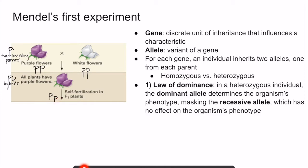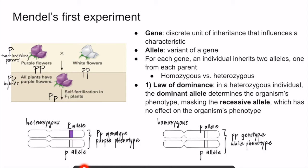Because of the law of dominance, recessive traits are only expressed in homozygous recessive individuals who have two recessive alleles for that trait. For example, the white flowers in the parental generation have two recessive white alleles, which is why they actually express the white color trait. Here there is an overview of these terms shown through a schematic of chromosomes.